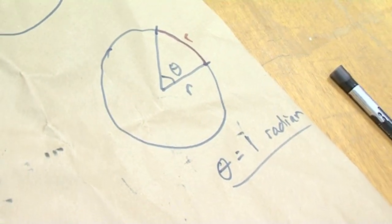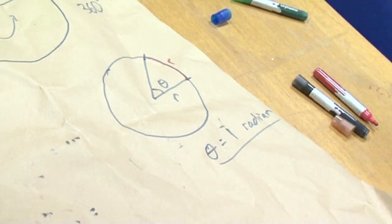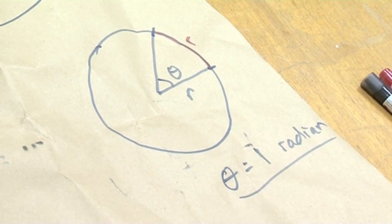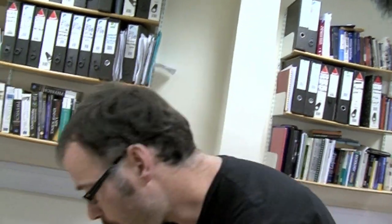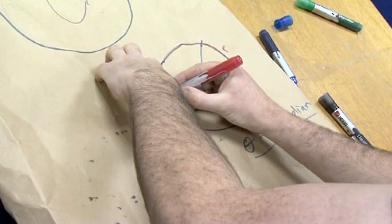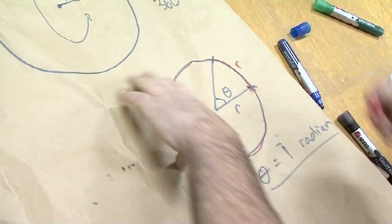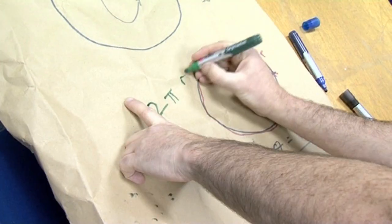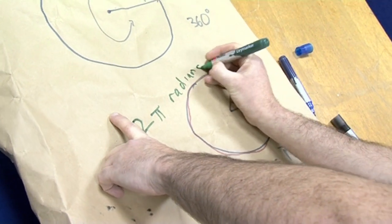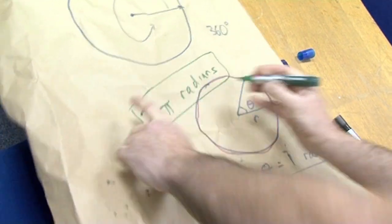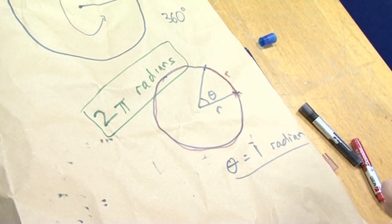That's a much more natural definition, because here we're basing it on just the fundamental properties of the circle, instead of saying that's 360 degrees. We're saying that when we go around a certain arc length equal to the radius, that's a radian. Now the question is, how many radians do we get if we go all the way around the circle? It turns out to be 2π radians, because the circumference length is 2πr.